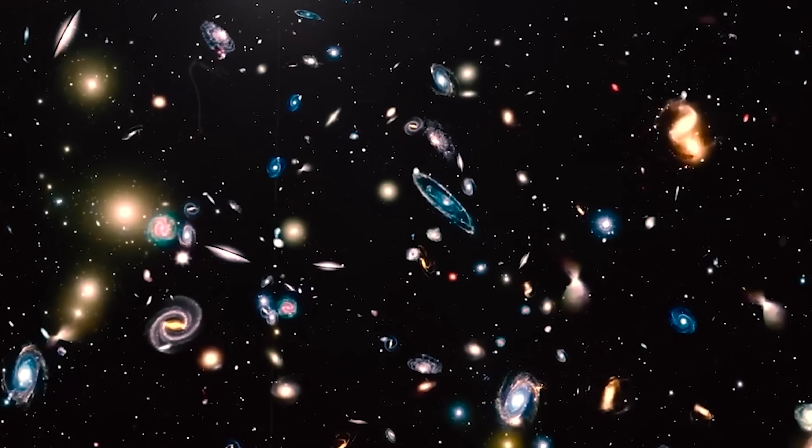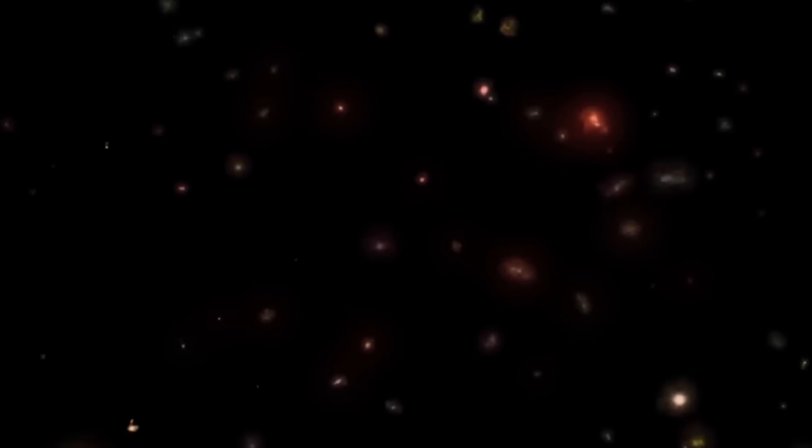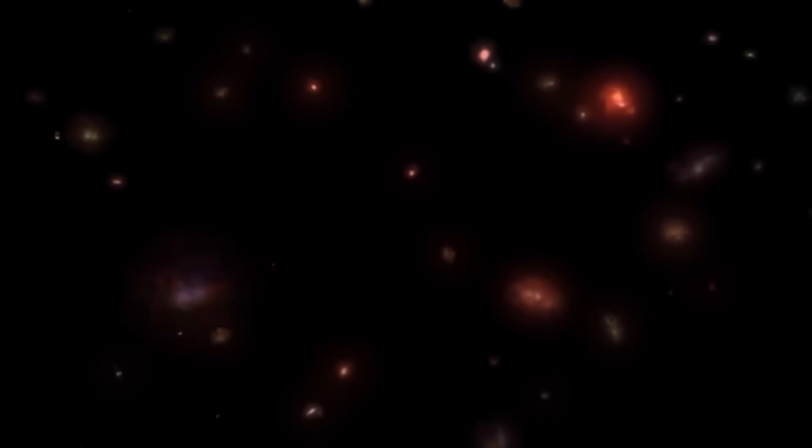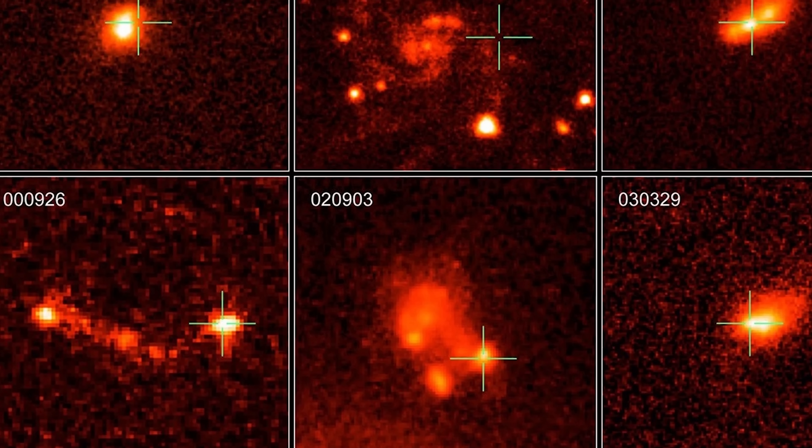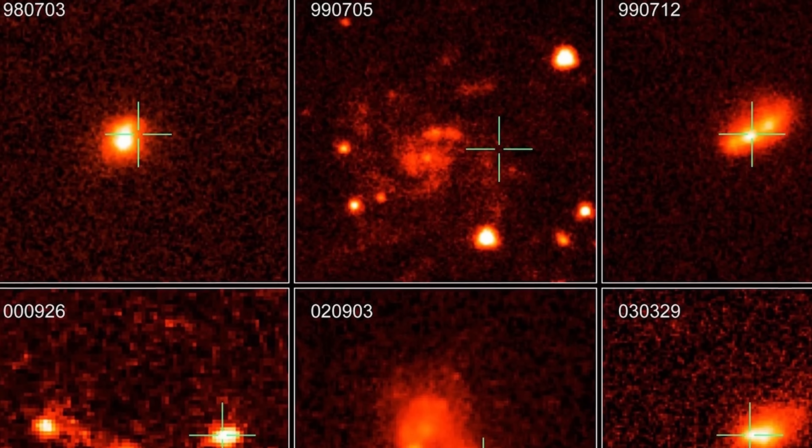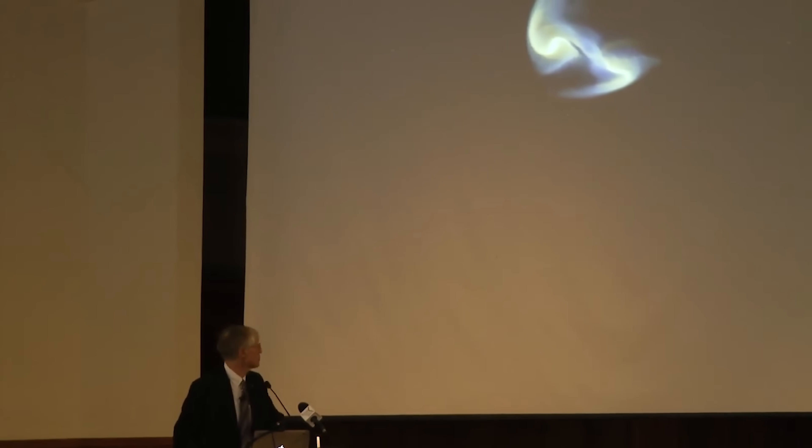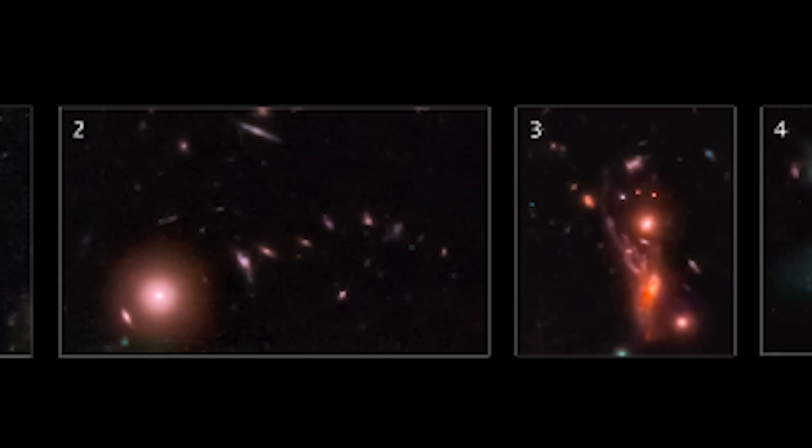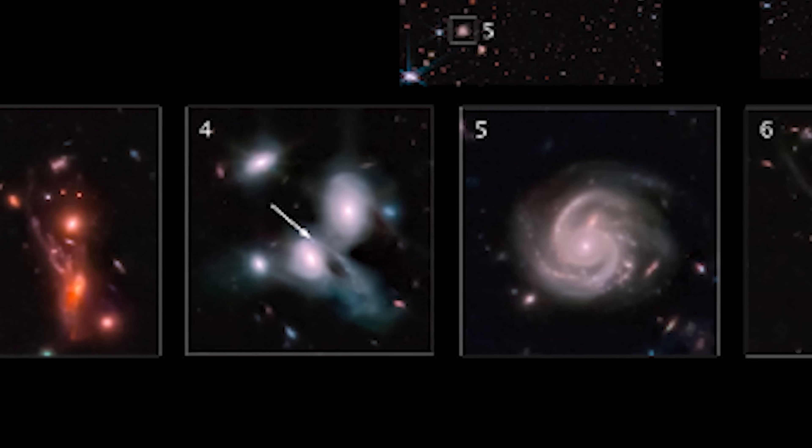Researchers expected early galaxies to be diminutive, cooler, and dimmer than those now being observed. Instead, they are astounded by the unexpected characteristics of these early cosmic structures. Dr. Mather remarked, "The big surprise is that the early galaxies grew much quicker than we thought. They're bigger, brighter, hotter, and more massive than people expected."